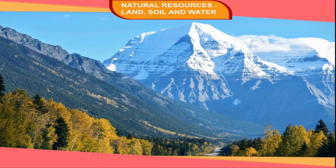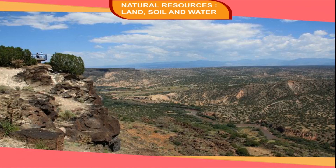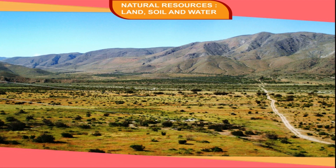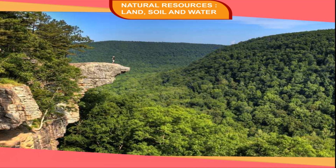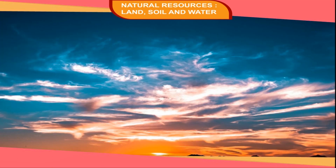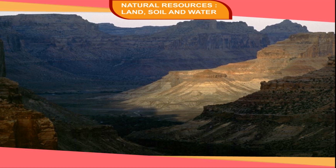Mountains are the high altitude regions on the surface of the earth. All major continents have some spectacular mountain ranges. These mountains have most useful forests and various types of vegetation. They control the climate. Many high altitude mountains are covered with snow, which is the source of a number of perennial rivers.